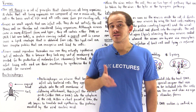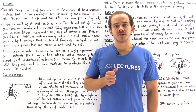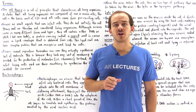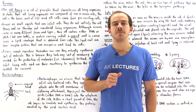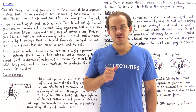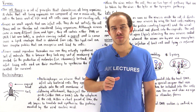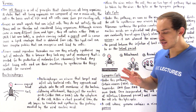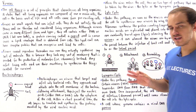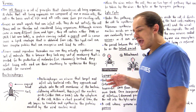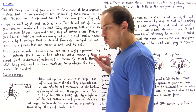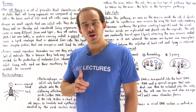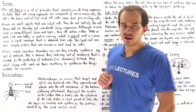The cell theory is a set of principles that defines what it means for an organism to be a living organism. The cell theory states that the basic unit of life is a cell and all living organisms consist of one or more cells.